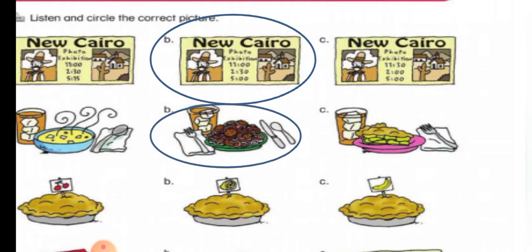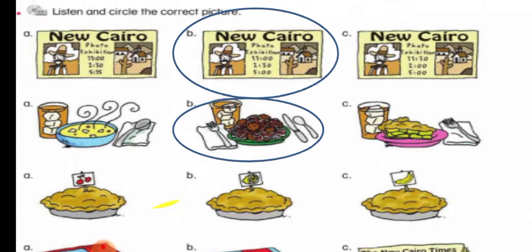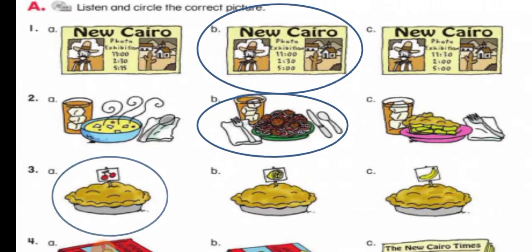Number three. Baker. Hi, can I help you? Yes, please. What kinds of pies do you have? We have lemon, peach, and cherry. How about apple? I love apple pie. Sorry, we are out of apple. Oh, how much are the cherry pies? They are 10 pounds each. Okay, I will take a cherry pie. Great. The answer is A.